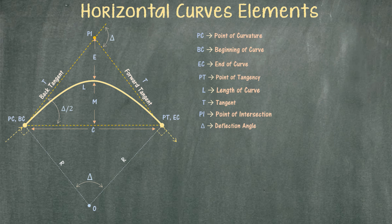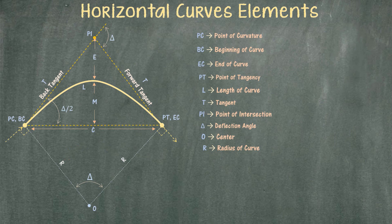The lines drawn from the beginning of the curve or the end of the curve all the way to the center of the circle are called the radius of curve. Just to make sure — the term can sometimes be stated in the problem statement without a diagram, and they'll just call it radius of curve. That way you know what they mean.